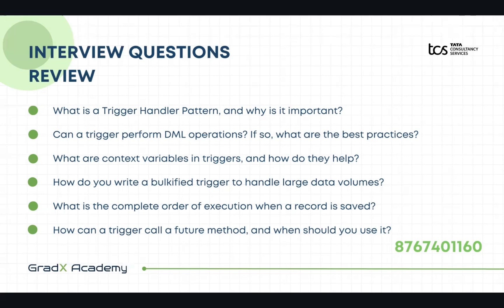What are the context variables in a trigger and how are they helpful? Context variables are system-defined variables that give us information about the DML operation that is executing the trigger. There are more than 13 trigger context variables. The major ones we use are Trigger.new, Trigger.old, Trigger.newMap, and Trigger.oldMap. We also use DML context variables like isInsert, isUpdate, isDelete, isUndelete, and event-specific variables like isBefore and isAfter.